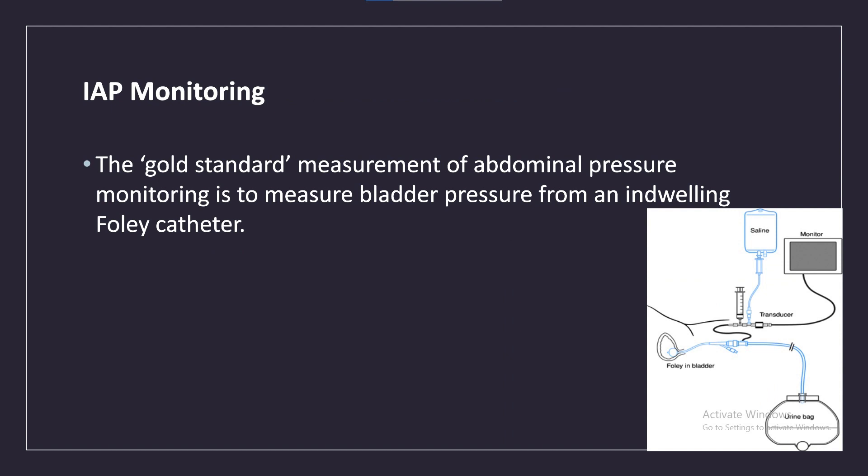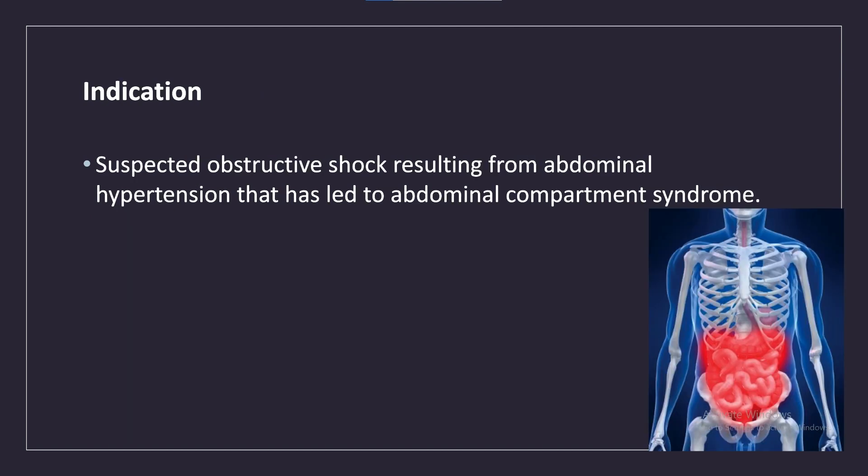IAP monitoring: The gold standard measurement of abdominal pressure monitoring is to measure bladder pressure from an indwelling Foley catheter. Indication: suspected obstructive shock resulting from abdominal hypertension that has led to abdominal compartment syndrome.